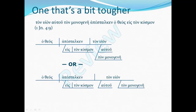The verb is apestalken — has sent. Who or what has sent? God has sent. So hathos is the subject. God has sent who or what? He sent his Son, so ton huion is the object. Then autou modifies huion, monogene also modifies huion, and the prepositional phrase eis ton kosmon tells us where God sent his only begotten Son.